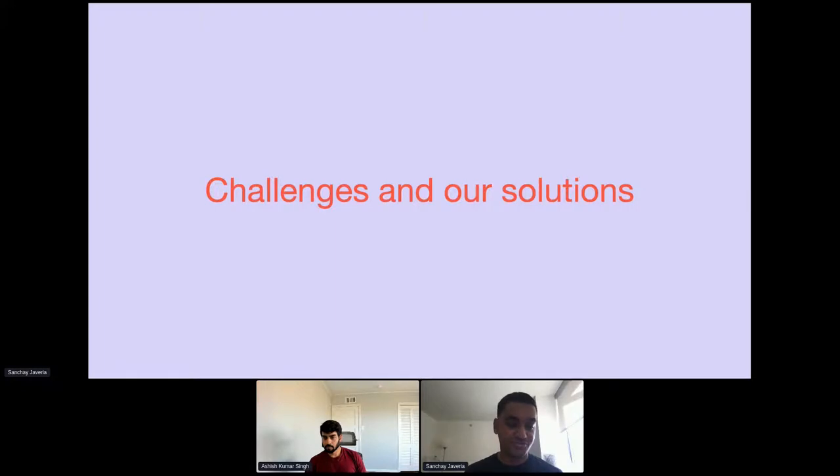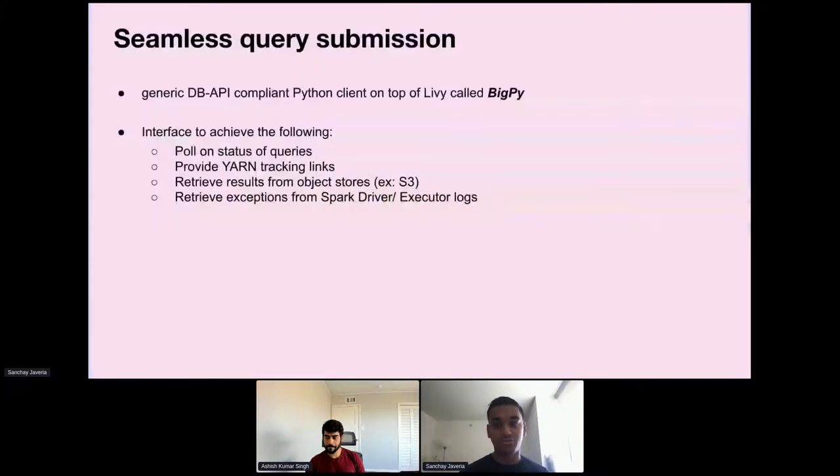Next I'll talk about some of the challenges that we faced along the way and how we solved them. The first thing is that while Livy provided a very reliable solution to submit the queries as a Spark job, we needed users to submit queries from any client remotely using a standard interface that can be used as a drop-in dependency to easily communicate with Livy. For that we wrote a generic DB API compliant Python client called BigPi. BigPi enables a modular way of interacting with Livy across several different systems. It provides a clear separation of concerns from the client code and has the abilities to pull on the status of running queries, provide Yarn tracking links to monitor the applications, retrieve results from object stores, in our case S3, and retrieve exceptions from the driver or executor logs in case the query failed. We also plan on open sourcing BigPi in the future as well.